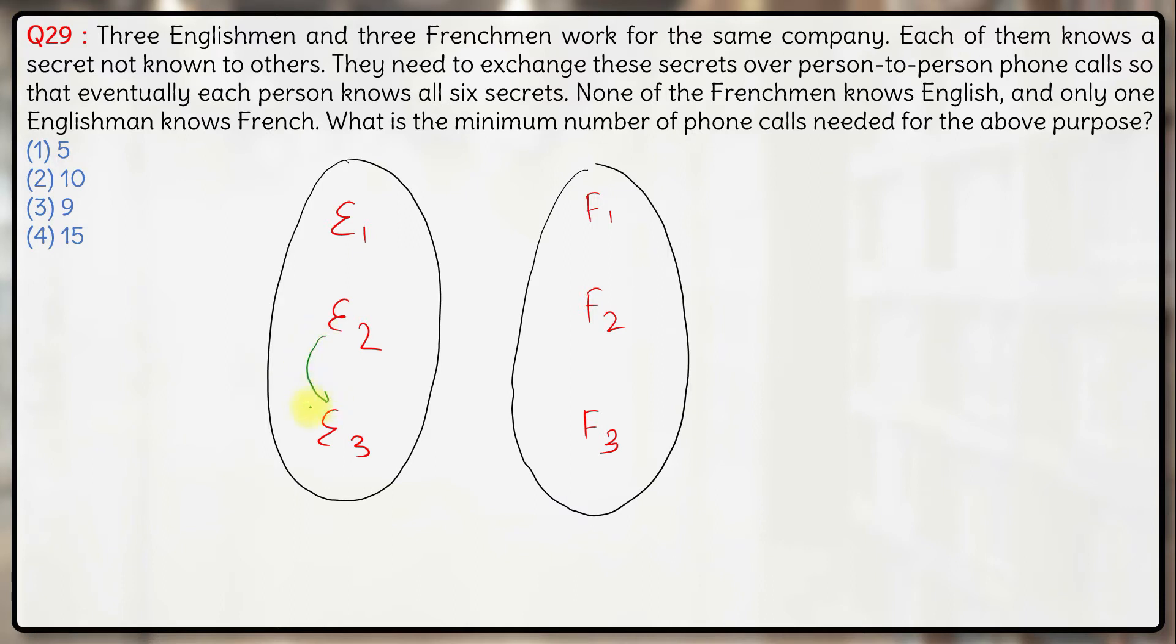So what we can do here is, let's say E2 calls up E3 and tells him his secret. E1 calls up E3 and tells him his secret. So now E3 knows the secret of E1 and E2. E3 knows E1 secret and E1 will know E3 secret.